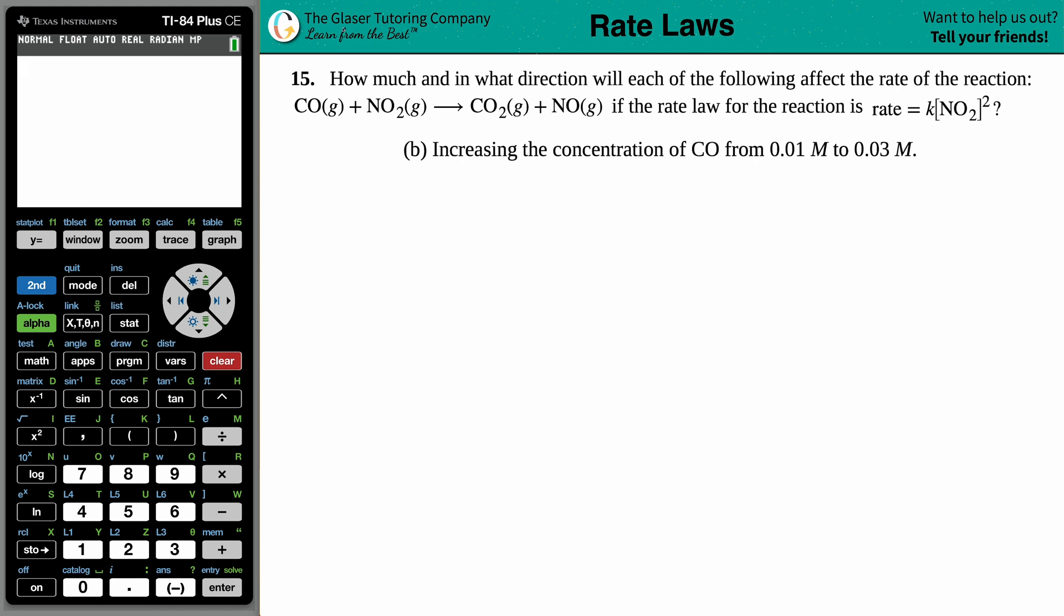Number 15, how much and in what direction will each of the following affect the rate of the reaction? They give us a balanced equation: CO gas plus NO2 gas yields CO2 gas plus NO gas.